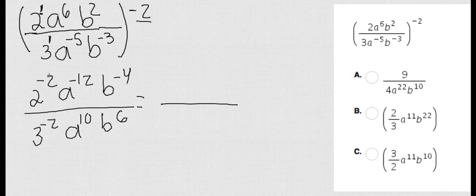If I move this 2 to the negative 2 to the bottom it's going to be positive. The same is going to happen with the A and the B. Now 3 to the negative 2 if I move it to the top it's actually going to switch the sign. A to the 10 and B to the 6 are positive so I shouldn't do anything about that.